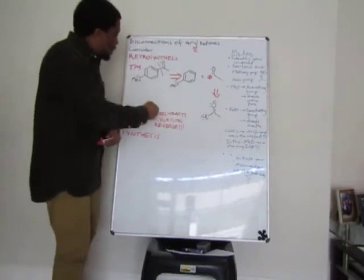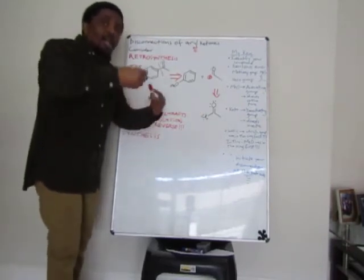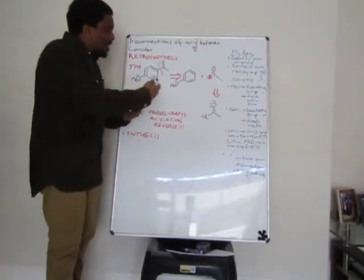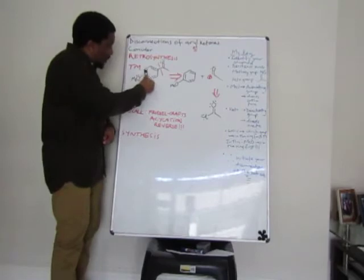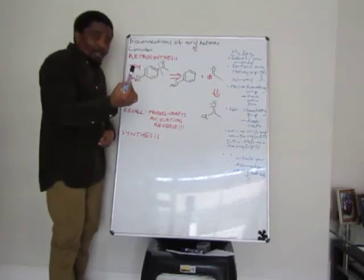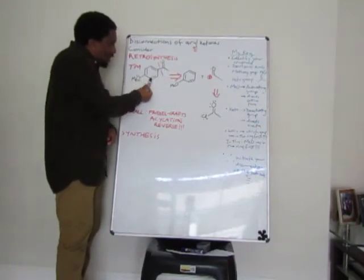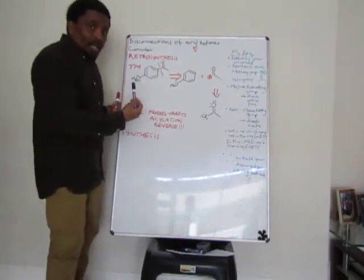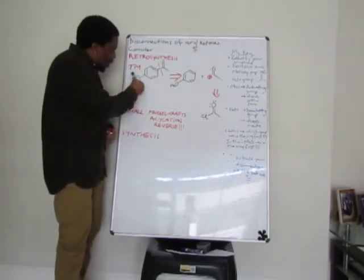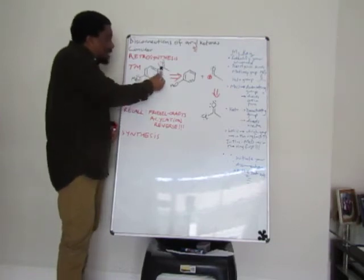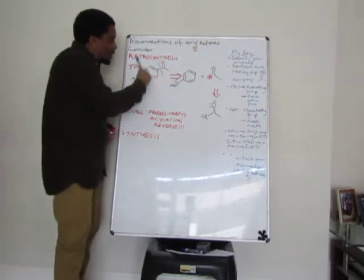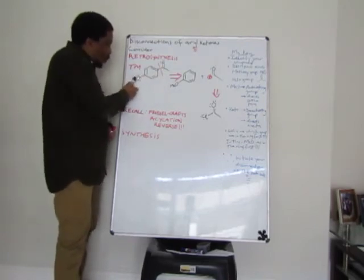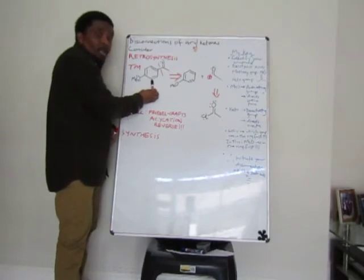Now, how do we know which group was in the ring first — was it the methoxy group or the keto group? You use logic. The methoxy group, once it is in the ring as the first substituent, is going to direct ortho or para. The keto group directs meta. So automatically you can tell that the methoxy group was in the ring first, and it directed the incoming group to this position. If we had the keto group first, the methoxy wouldn't be where it is — it would be in the meta position.